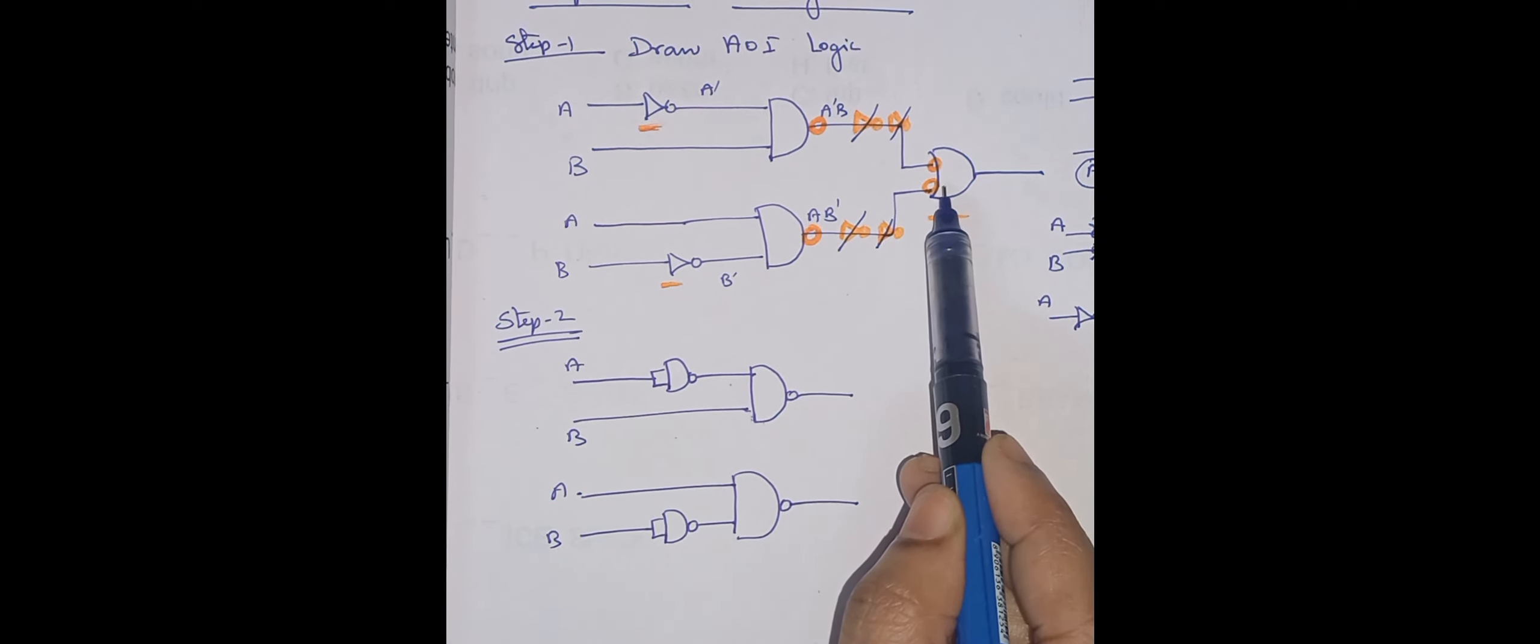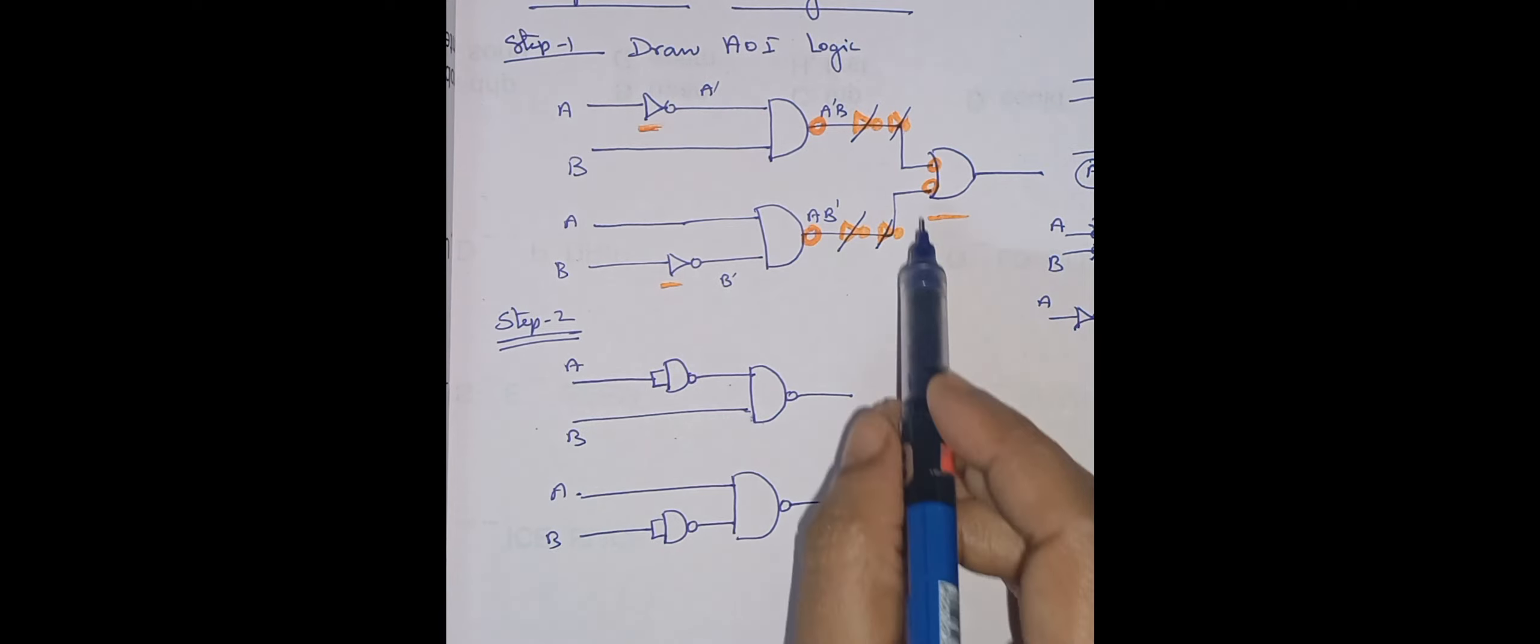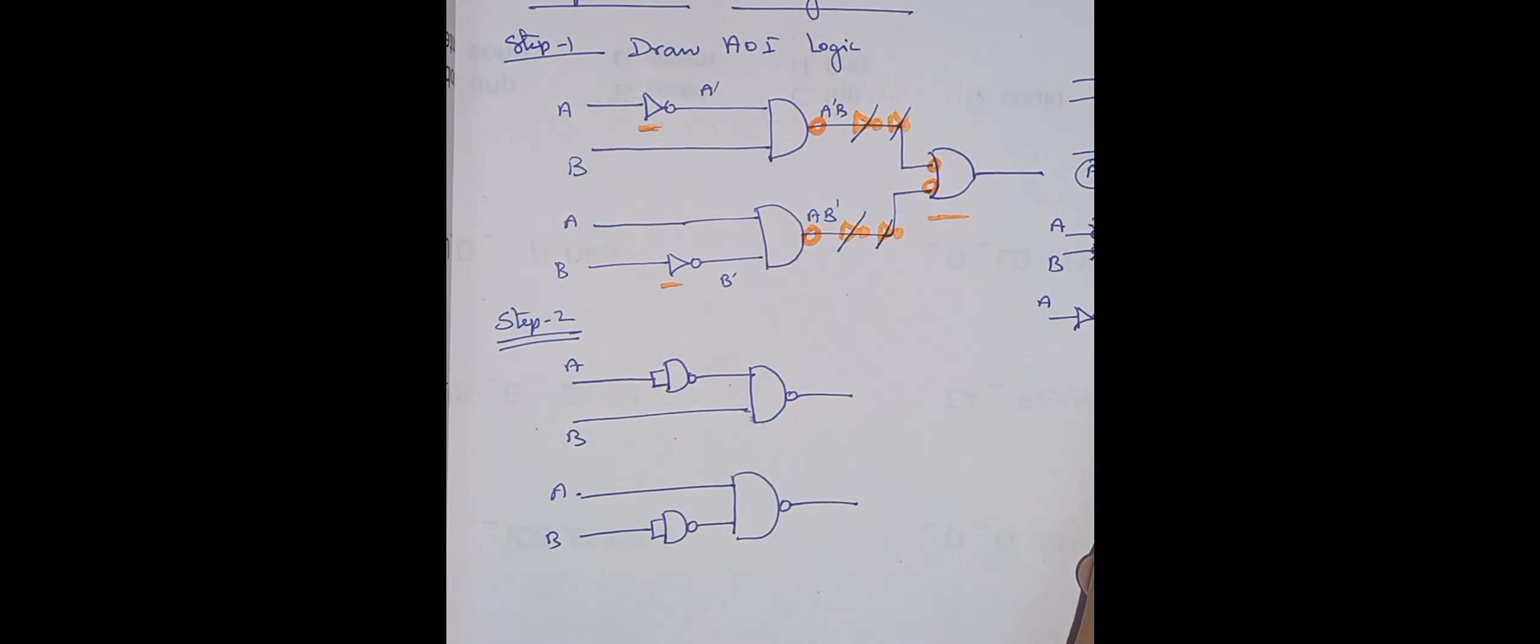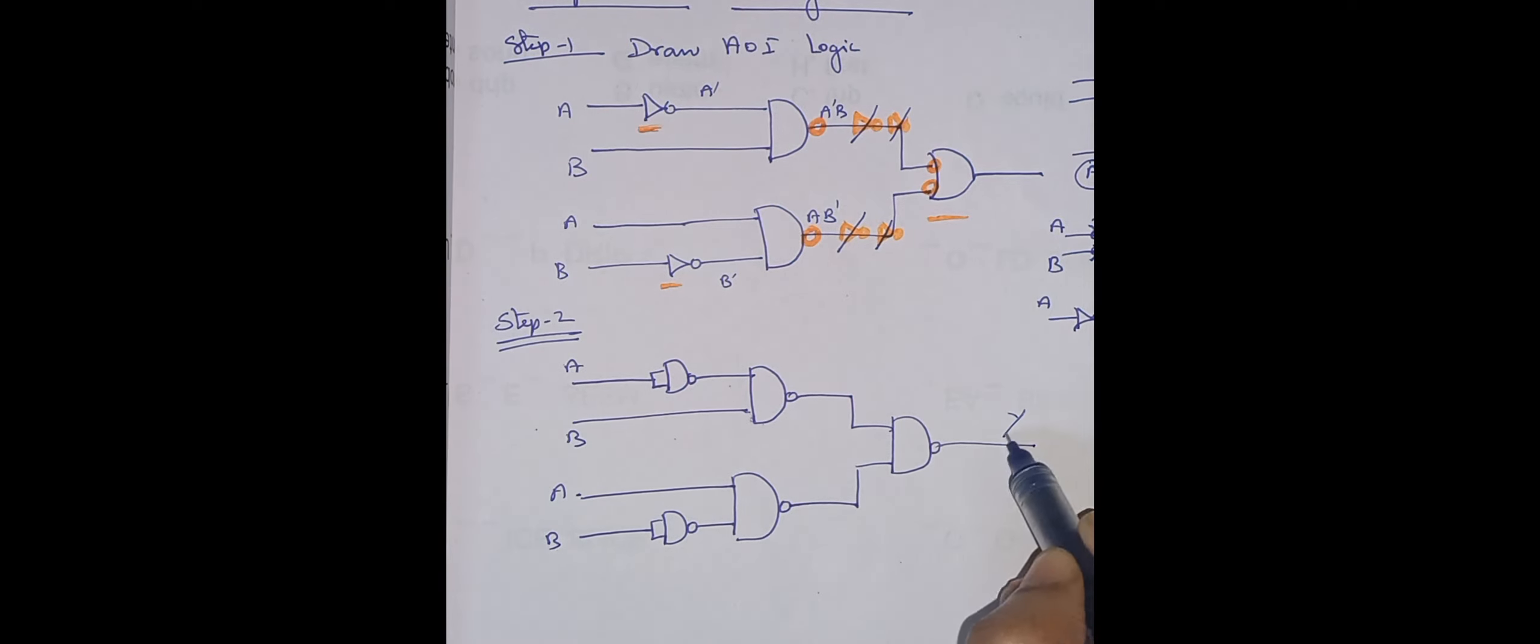Then again, NAND gate. And then see, in this line there is no inverter as it is cancelled. Then we find bubbled OR gate. I already proved bubbled OR gate is equivalent to NAND gate. Hence I can replace this as NAND gate. This is output Y. Now all the gates are NAND gates only.